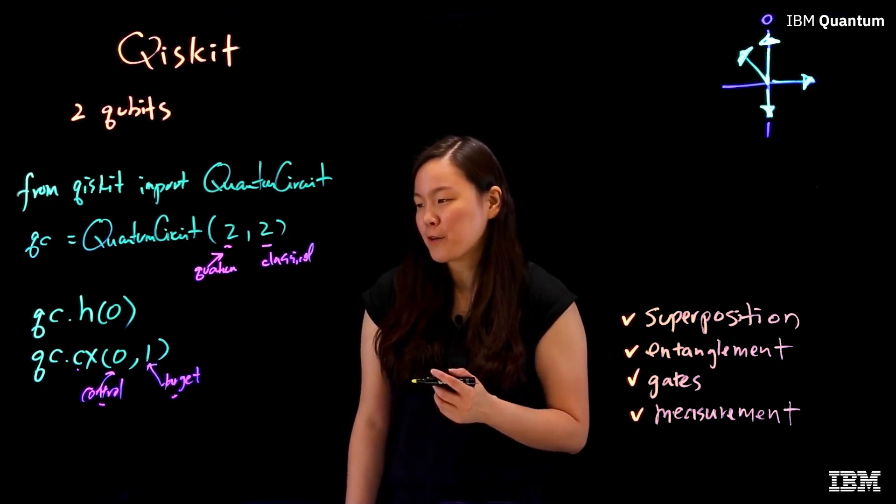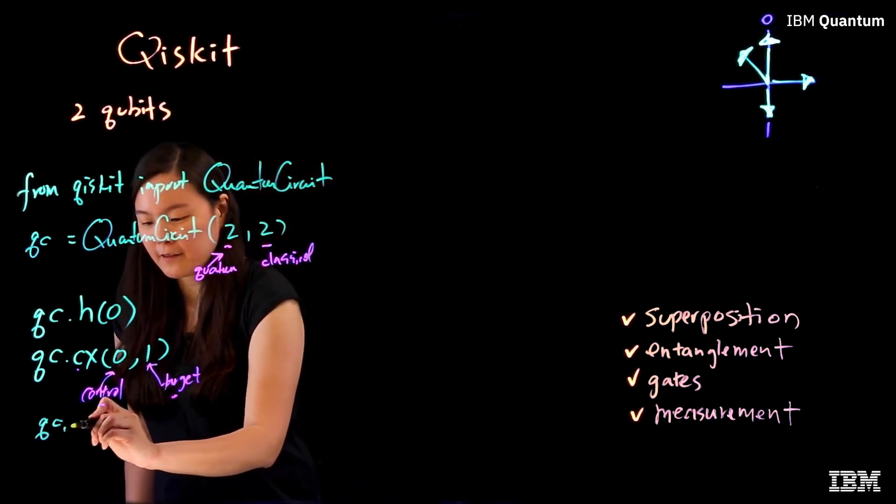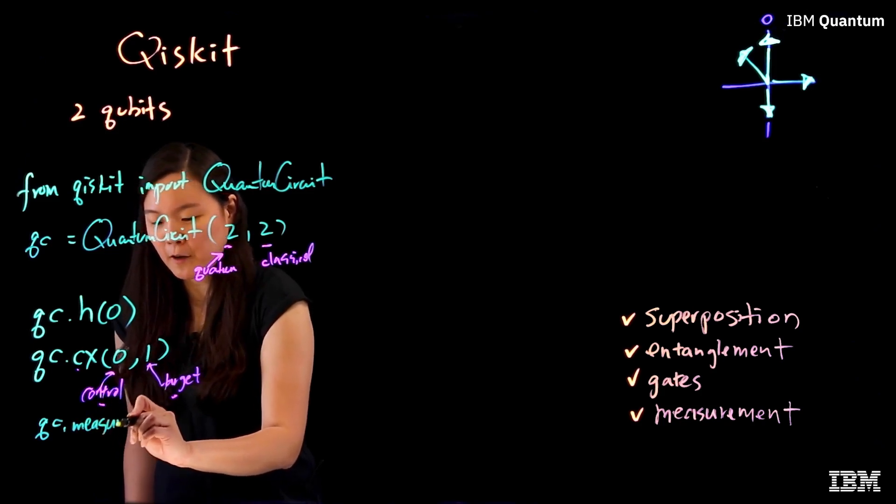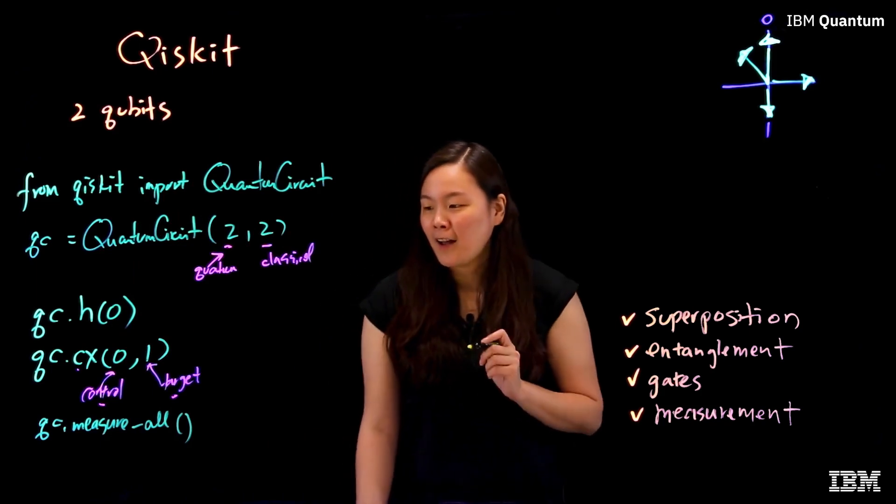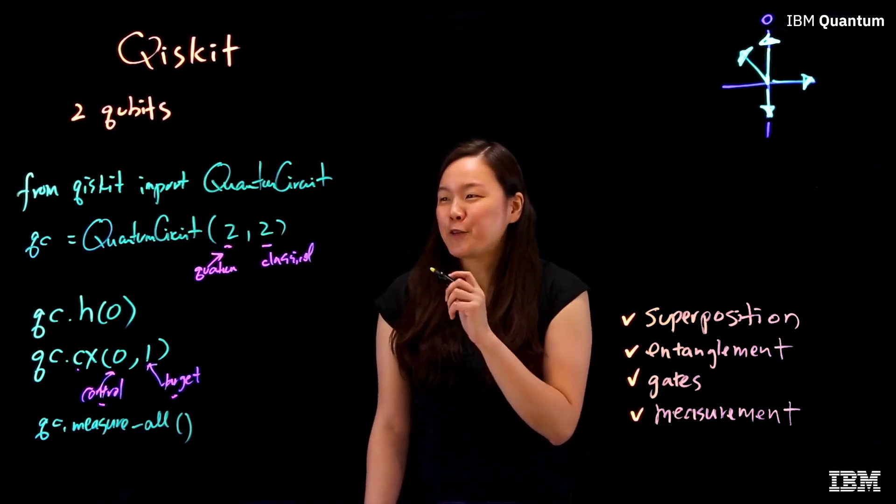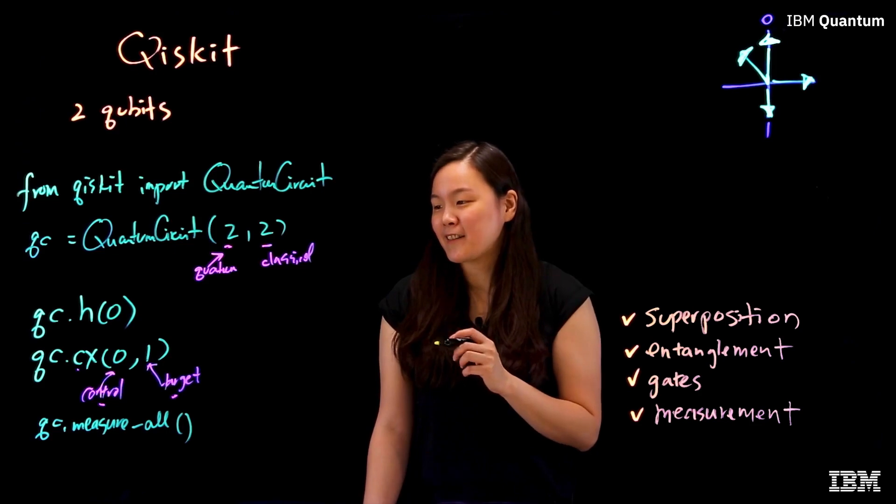So the last thing we want to do is actually do measurements so we can get the outputs. And we do this by calling the measureAll function. And there you have it. We just wrote a simple quantum program using Qiskit.